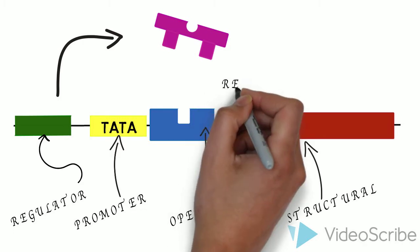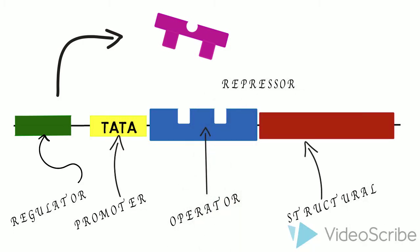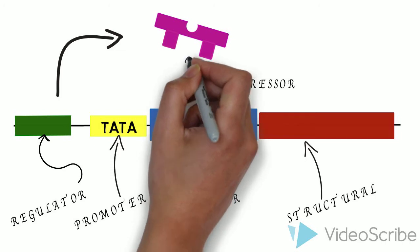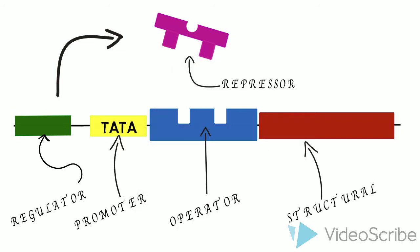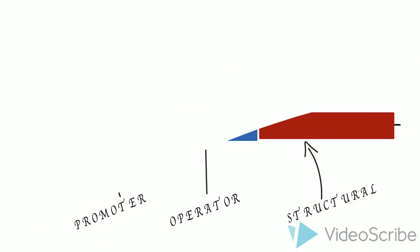As mentioned, the regulator is going to produce this repressor, which is a protein with a very specific shape so that it can bind to the operator. Let's see how this process works using an example.